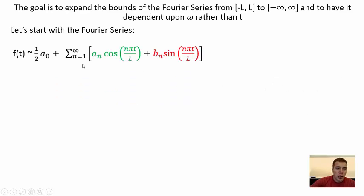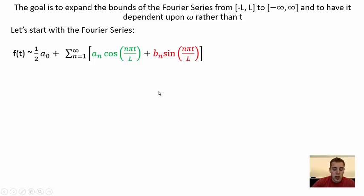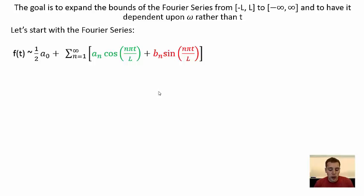Here again we have the Fourier series. The Fourier series is based upon the period negative l to l — it's really the function repeated over and over infinitely many times. But we want to expand those bounds from negative l to l, which are set periods, to negative infinity to infinity. We want to stretch the period so that the only bounds are negative infinity and infinity, so that we can model a function of sines and cosines on an infinite domain rather than just from negative l to l.